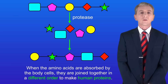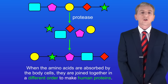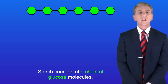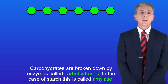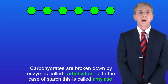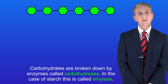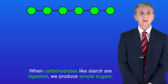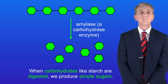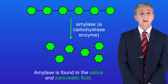Now we're going to look at the digestion of starch, which is an example of a carbohydrate. Starch consists of a chain of glucose molecules. Carbohydrates like starch are broken down by enzymes called carbohydrases, and in the case of starch the specific enzyme is called amylase. When carbohydrates like starch are digested we produce simple sugars. Amylase is found in the saliva and in the pancreatic fluid.